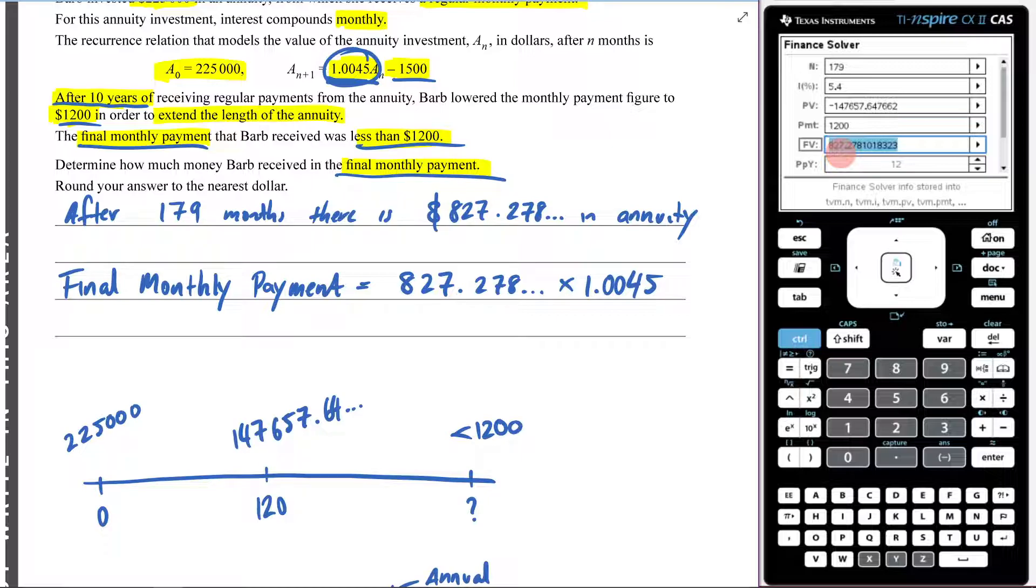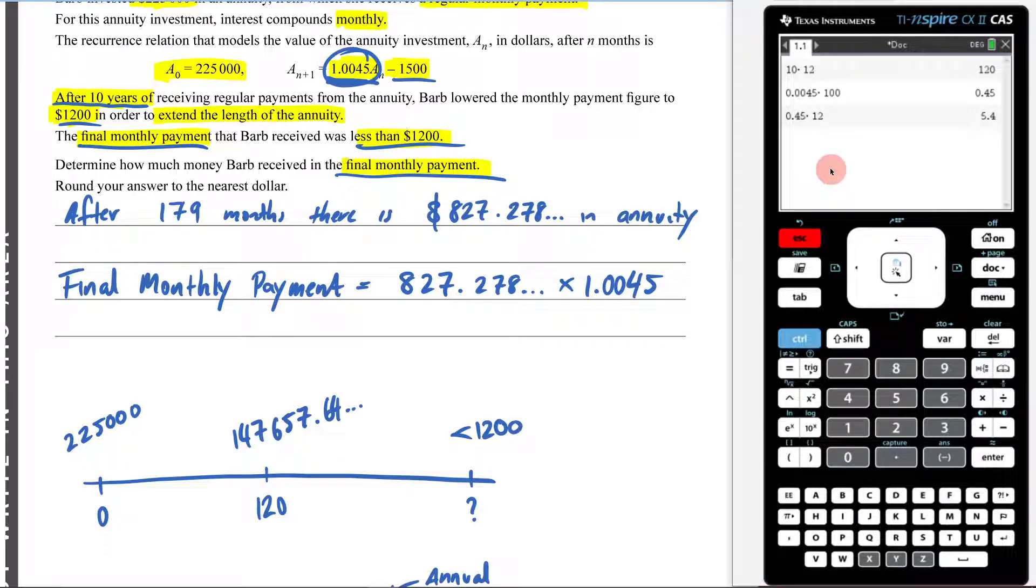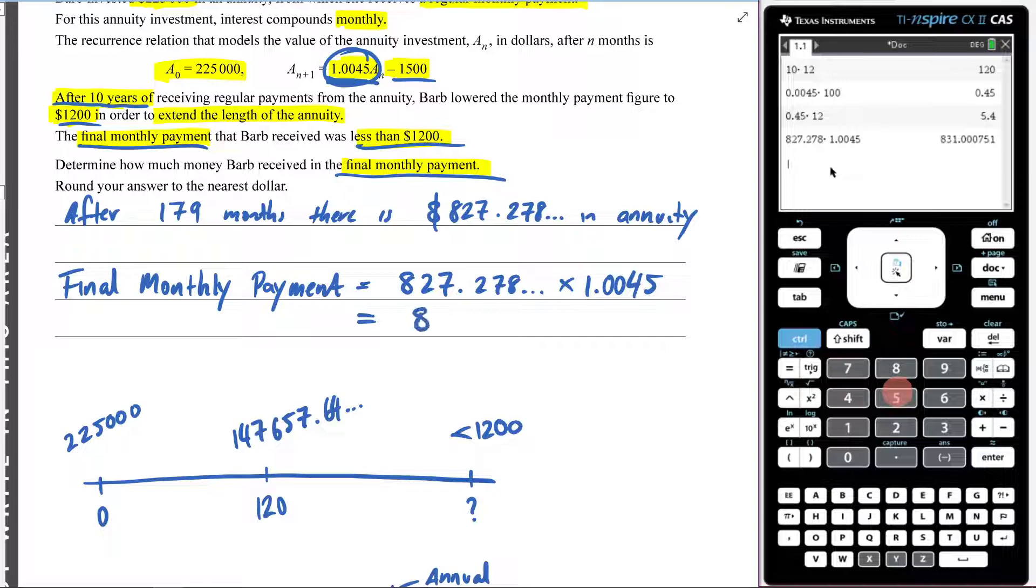So now what I'm going to do is I'm going to come out here. I'm going to go 827.278 times that by 1.0045. And that's going to leave me with, now I need to round the answer to the nearest dollar. It will be 831. 831 will be my final answer there. 831 will be the final monthly payment.